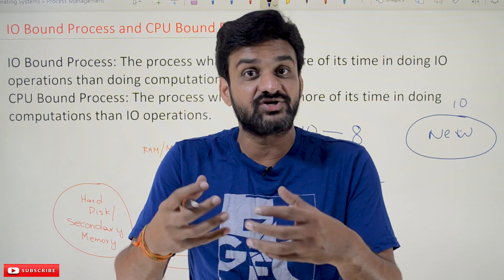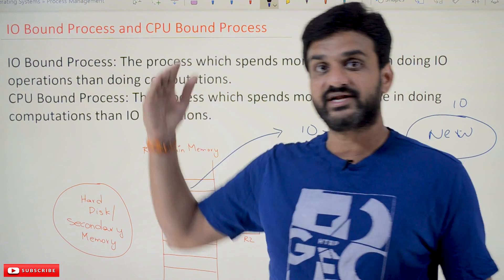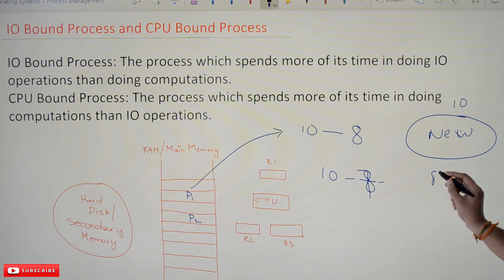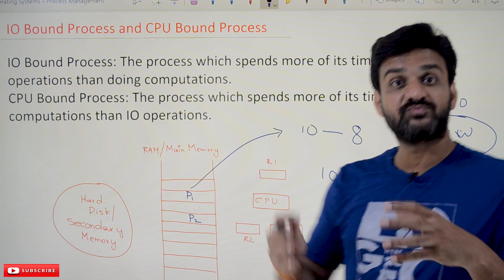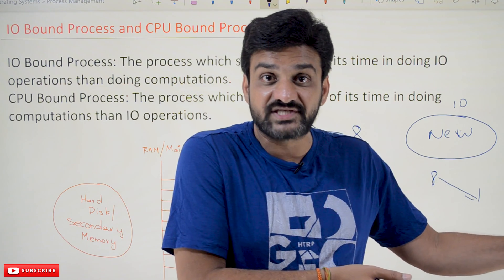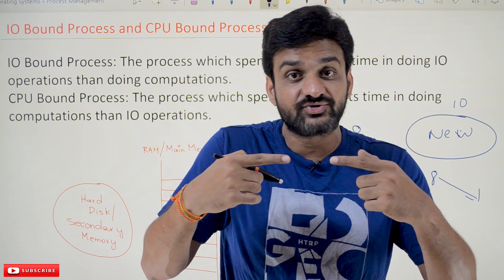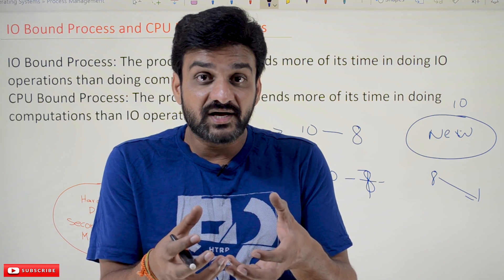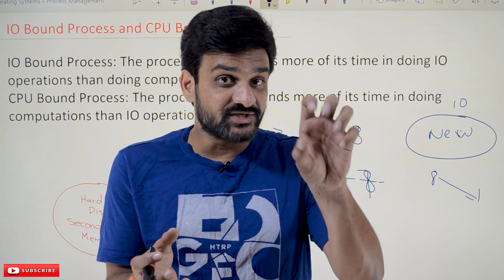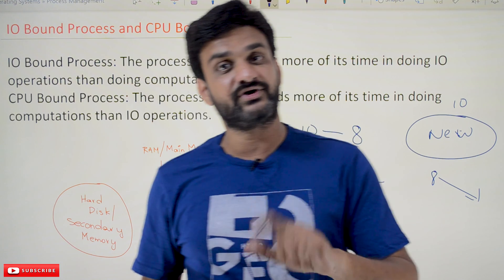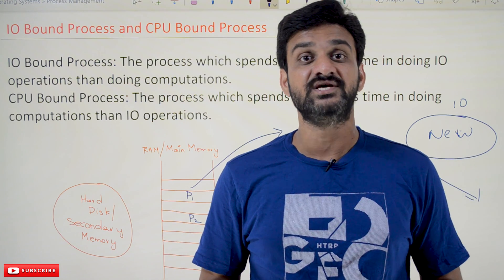If the scheduler does not work that way — for example, if there are 10 processes and 8 of them are IO-bound, and the scheduler picks all eight IO-bound processes at once — then most of the processes will be waiting on IO operations, it will take a lot of time, and CPU time will get wasted. In order to better utilize the resources of the system, we have to take a mix of IO-bound and CPU-bound processes. We will discuss this concept in depth when we cover schedulers.